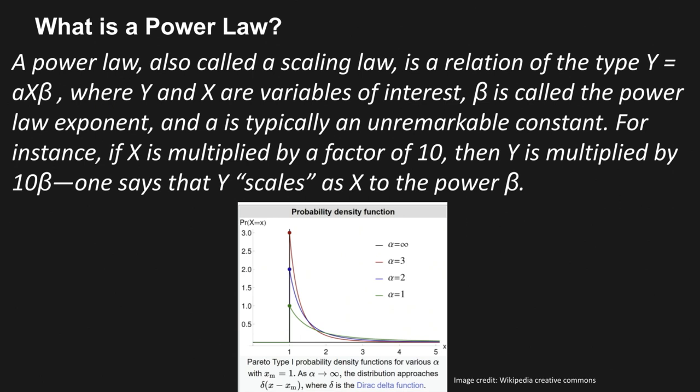Beta is typically some constant — important, but not the focus of this discussion. Here's the example: if X is multiplied by a factor of 10, then Y is multiplied by 10 to the power of beta. One could say that Y scales as X to the power of beta. In mathematics, an example of a power law that many of you will be familiar with is a Pareto distribution, otherwise known as the 80-20 rule.